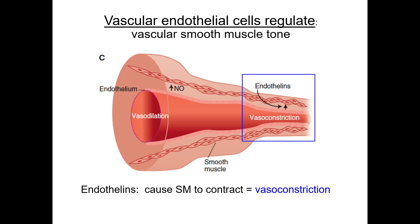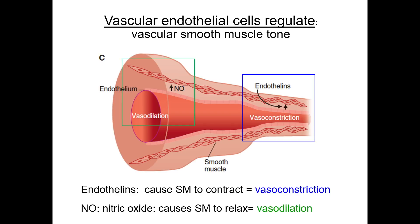Here's another example of one function of vascular endothelial cells: regulation of vascular tone. Endothelial cells produce vasoactive substances that induce contraction or relaxation of smooth muscle cells, causing vasoconstriction or vasodilation, respectively. Endothelins cause vasoconstriction, while nitric oxide causes smooth muscle cells to relax, causing vasodilation.